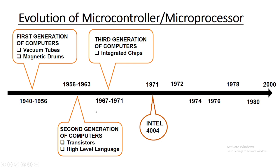Later, in 1972, Intel came out with its next processor, the 8008. It was an 8-bit processor, meaning it could process 8 bits of information at a time, contained 3,500 transistors, and ran at a clock speed of 500 to 800 kilohertz.